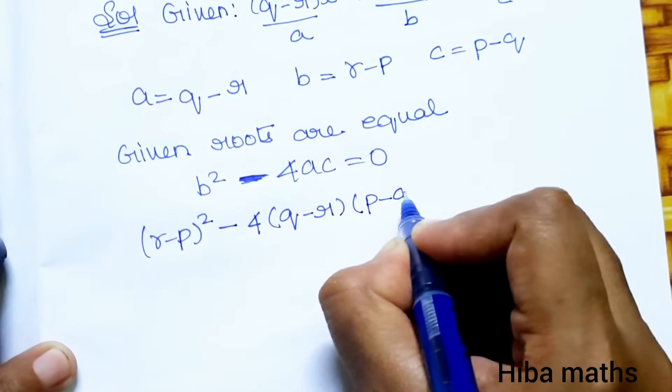Given that roots are equal. For equal roots, the condition is b² - 4ac = 0. Substituting b value: (r - p)² - 4 × (q - r) × (p - q) = 0.